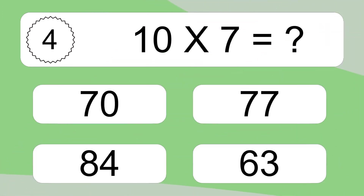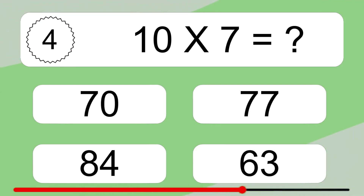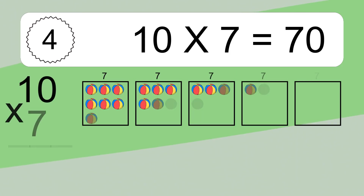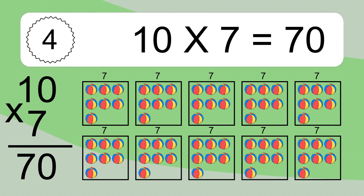Ten times seven equals what? Ten times seven equals seventy. We have ten boxes, and each box has seven colorful balls inside. If you count all the balls in all the boxes together, you will have ten times seven balls. This equals seventy balls.